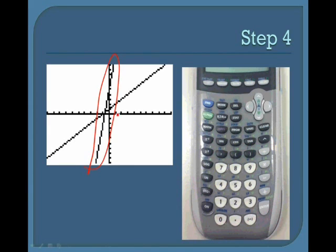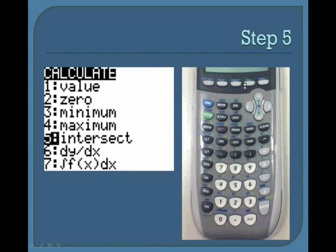Next, you will see your two lines more zoomed out. Now, to find the intersect, you must click on the second button and calc. You will see options. Click on the fifth option, which is labeled as intersect.